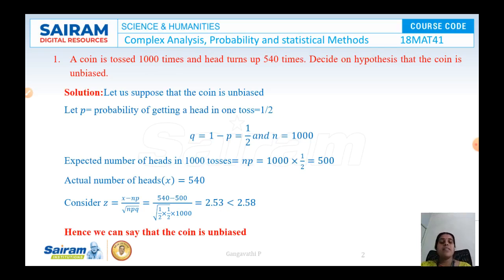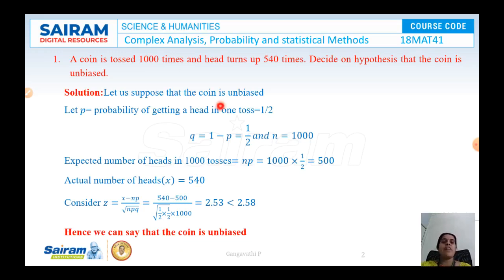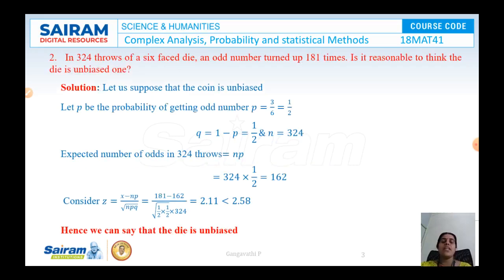At a 1% significance level the standard value is Z = 2.58, and our evaluated value of 2.53 is less than this standard value. Therefore we can conclude that the hypothesis — the assumption that the coin is unbiased — is true. This is how we apply the concept of sampling to solve problems. Let us see another example.